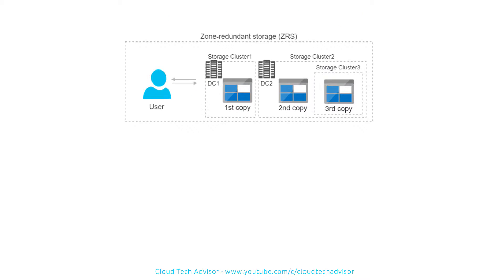The second one is Zone Redundant Storage. In this configuration, your data is replicated synchronously so that there are three copies across two or three facilities in a single region. Zone Redundant Storage is more redundant than LRS but does not protect against failures that affect a whole region. Zone Redundant Storage is only available for blob storage, and when you create an Azure virtual machine the VHD files are stored as page blobs in the Azure storage account, so this option may be of interest to you.